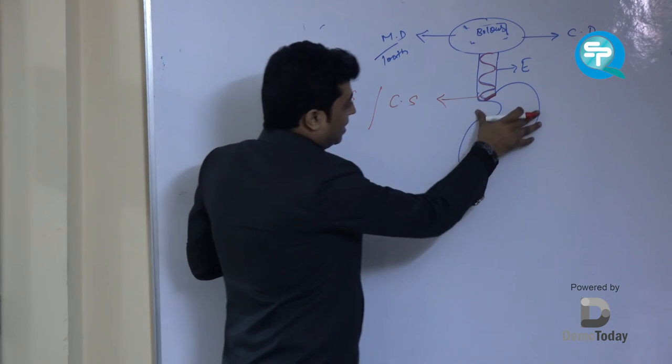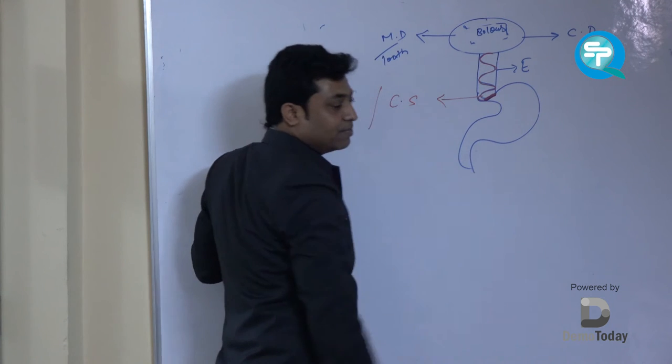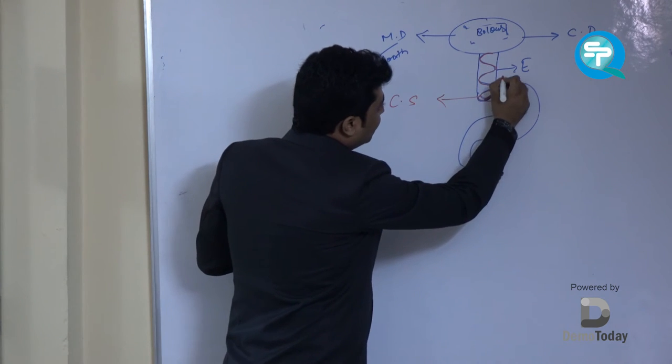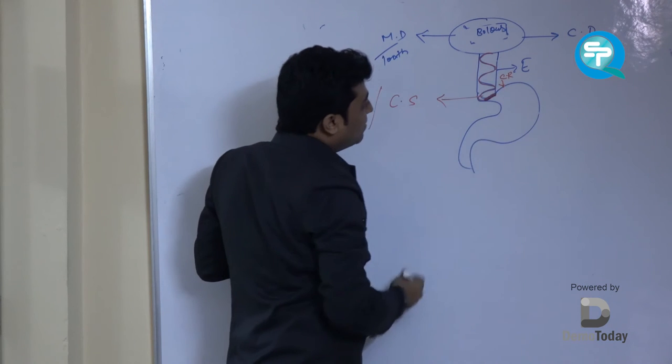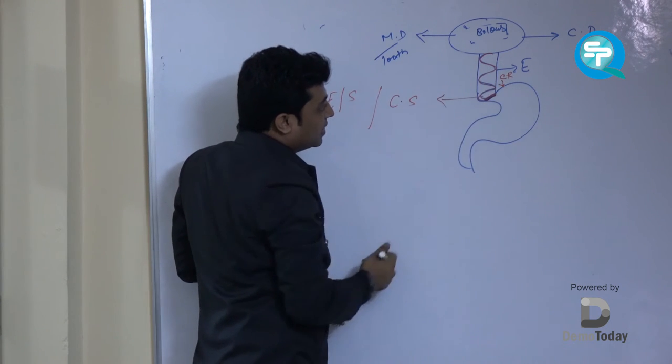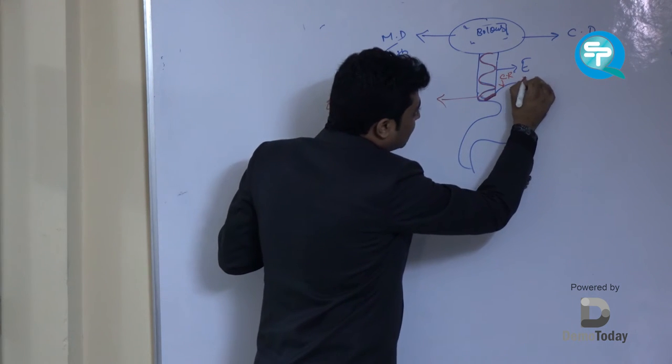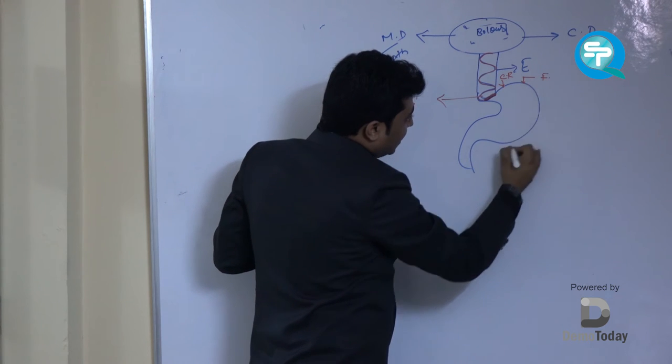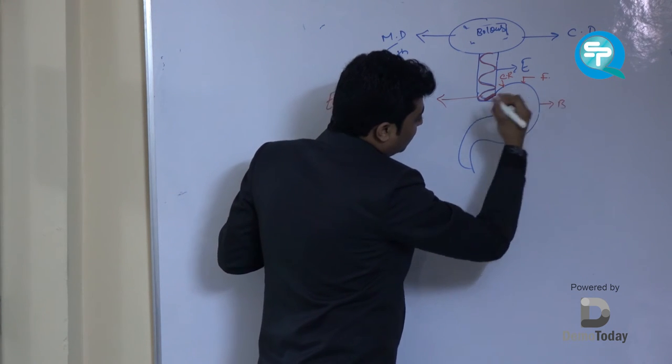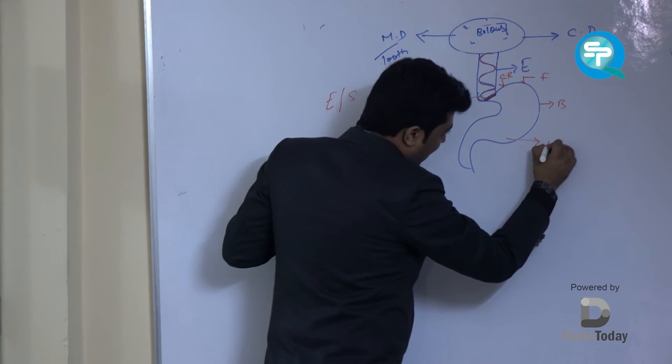Now here stomach can be divided into some parts. One is known as cardiac region, because it is very near to the heart. The upper curvature is known as fundus. The greater curvature is known as body and the lower one is known as antrum.